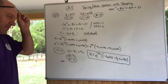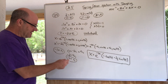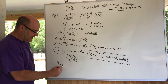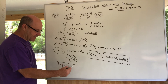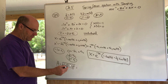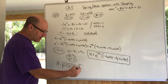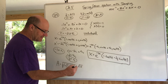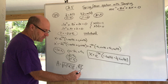We convert to the alternative form. The amplitude A is given by sqrt(c1² + c2²) — that's Pythagoras' theorem. We get sqrt(1 + 1/4) = sqrt(5/4), which simplifies to sqrt(5) / 2. That's our amplitude A.